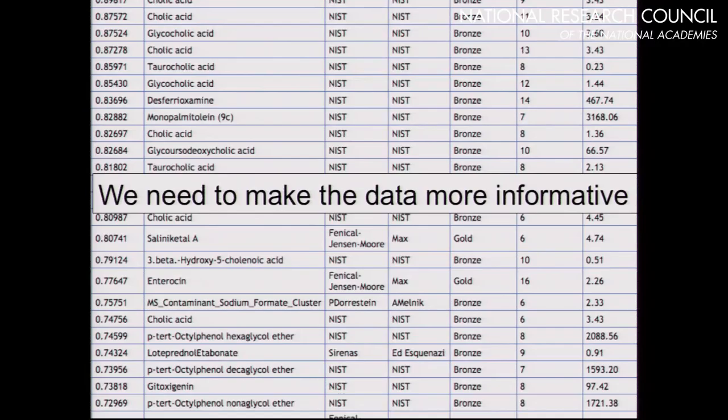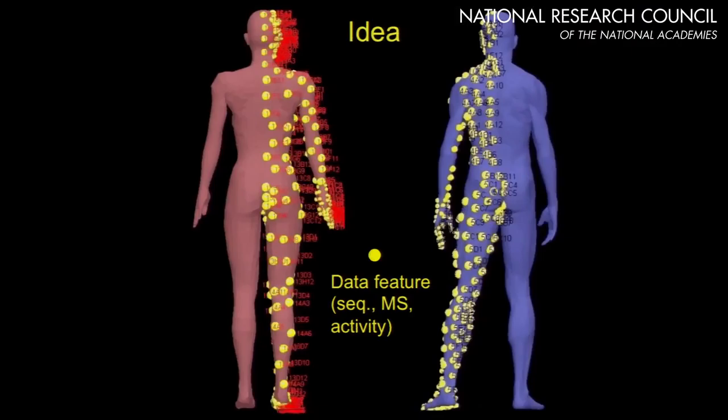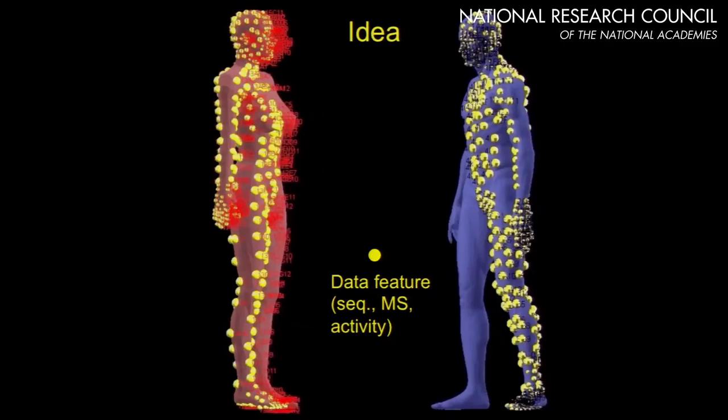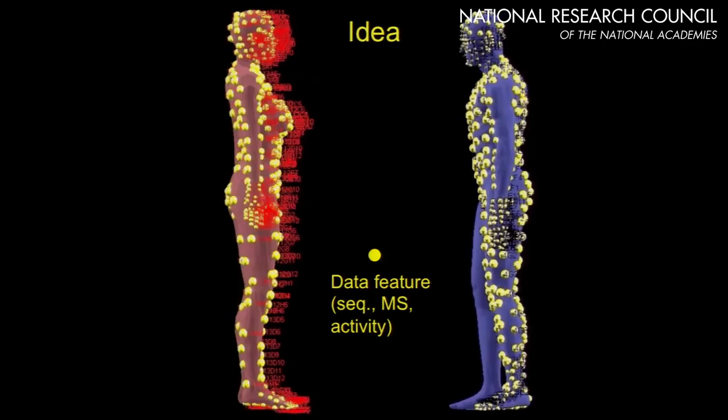Most of us are very familiar with spreadsheets where you get identifications and scores, but for the majority of life scientists, they still won't know what to do with this information. We need to make the data more informative. One idea was to collect data spatially or temporally and provide visualization tools, so that if you have an identification you can place it in context directly with other types of information such as sequencing.